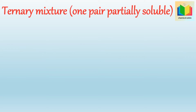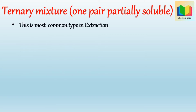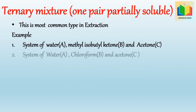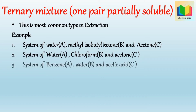The ternary system of one pair partially soluble is the most common type in extraction. Examples of this system are: the ternary system of water, methyl isobutyl ketone, and acetone; the ternary system of water, chloroform, and acetone; and the ternary system of benzene, water, and acetic acid.